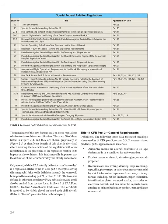The remainder of this text focuses only on those regulations relative to airworthiness certification. There are 30 of these listed in Figure 2-4, and they are shown graphically in Figure 2-5. A significant benefit of this chart is the visual effect showing the interaction of the regulation with other regulations and the placement of the regulation relative to its impact on airworthiness. It is fundamentally important that the definition of the term 'airworthy' be clearly understood. Only recently did the FAA actually define the term airworthy in a regulation. Prior to this definition in Part 3, the term could be implied from reading Part 21, Section 21.183, and could also be implied from the text found in Block 5 of FAA Form 8100-2, Standard Airworthiness Certificate.